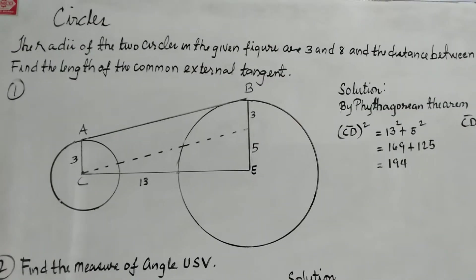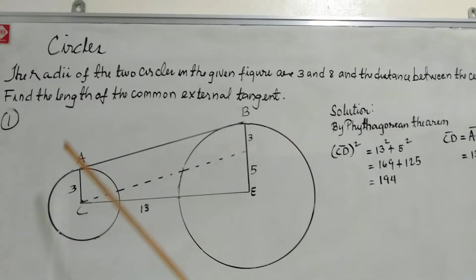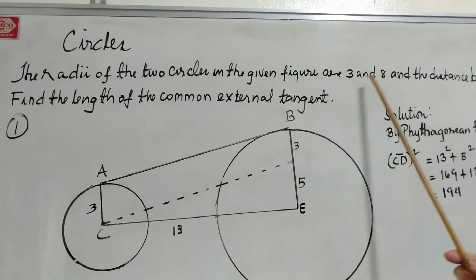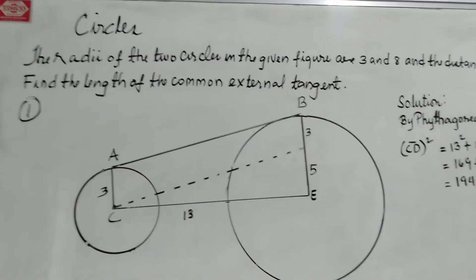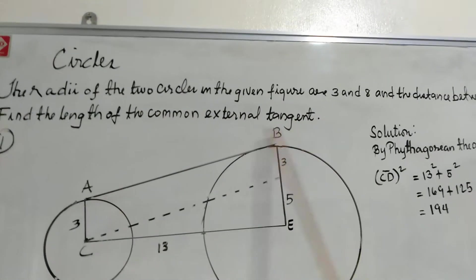Now we are going to discuss circles, and we have two problems for today. The first one, the radii of the two circles in the given figure are 3 and 8, and the distance between the centers is 13.